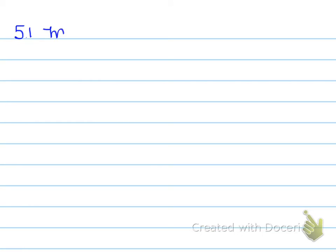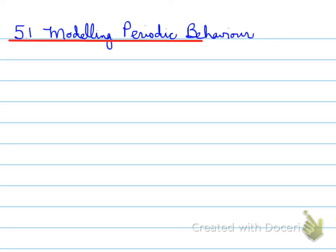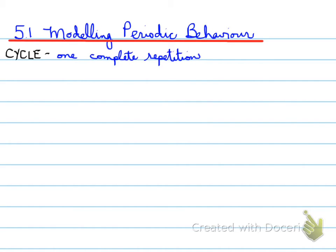Looking at 5.1, Modeling Periodic Functions Behavior. We're going to look at some definitions, such as a cycle. A cycle is one complete repetition of a pattern.